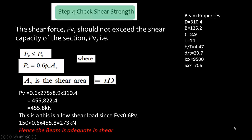The shear force FV should not exceed the shear capacity of the section. So the shear capacity of the beam which is denoted by PV is given by 0.6×PY×AV where AV is small t times D. So if you put in the values you get 0.6×275×8.9×310.4.